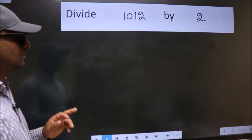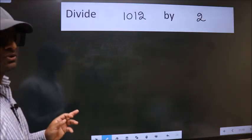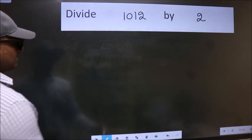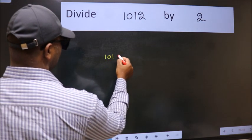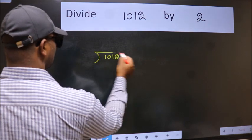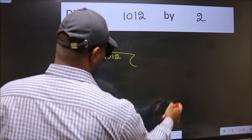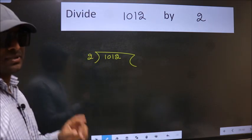Divide 1012 by 2. To do this division, we should frame it in this way. 1012 here, 2 here. This is your step 1.